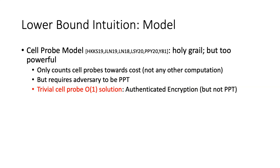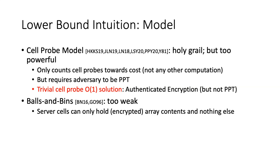There is also the balls-and-bins model used to prove some private data structure lower bounds, but in this case it's too weak. In this model, server cells can only hold encrypted array contents and nothing else — even the folklore FSE-RAM construction is not captured, because we also have encryptions of keys on the server. The model we use is called the symbolic model, which has been used in other recent works and is the perfect in-between of these two models.